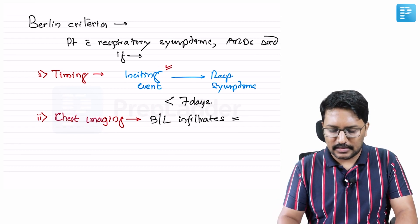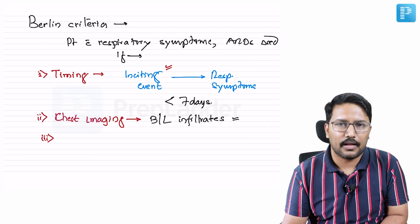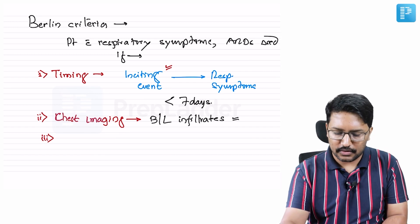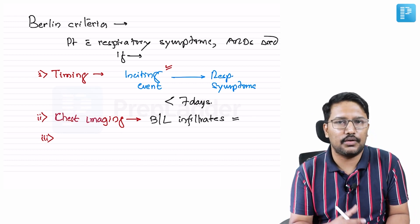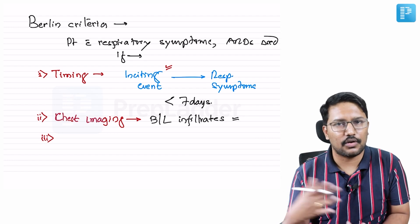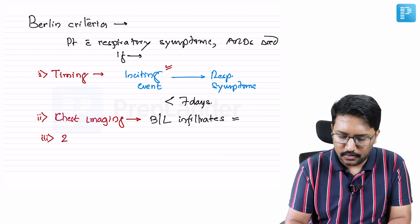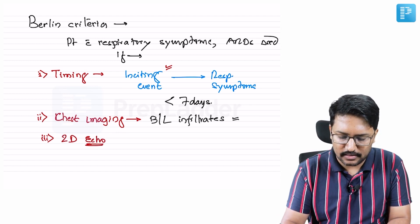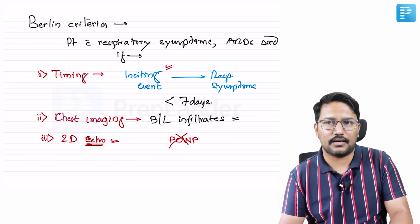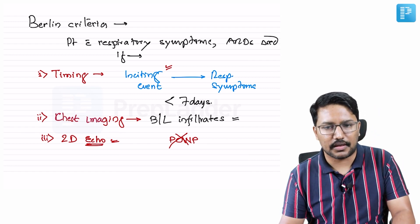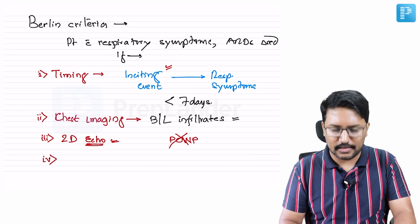Third criterion: we must rule out cardiogenic cause for pulmonary edema before calling it ARDS. Previous guidelines heavily relied on PCWP, requiring right heart catheterization to differentiate ARDS from cardiogenic pulmonary edema. In the Berlin criteria, the emphasis is on 2D echocardiography rather than PCWP — invasive procedures are done away with. If the 2D echo is normal, you can confirm there is no left heart failure and proceed to the next criterion.